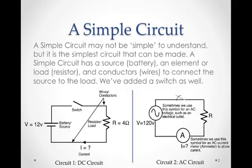First let's look at a simple circuit. It's called a simple circuit not because it's necessarily simple to understand, but it's the simplest circuit that can be made. In other words, you have a source such as the battery and you have a load such as a resistor, and then you have conductors, wires connecting the resistor and the battery together. In this circuit right here, we have also added a switch. So when the switch is closed, the battery is connected to the resistor with this top conductor, and then the resistor is connected back to the battery with this bottom conductor.